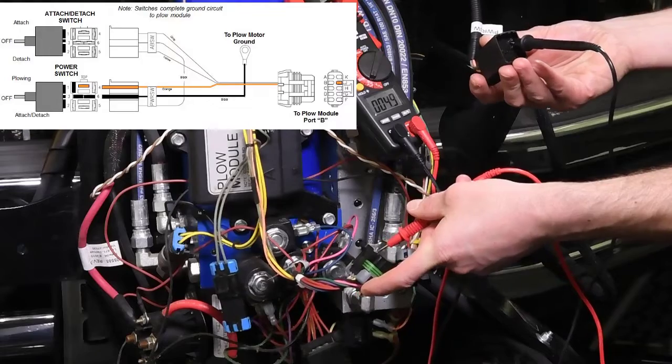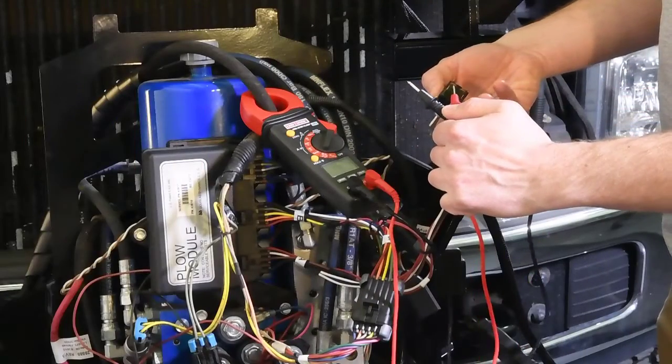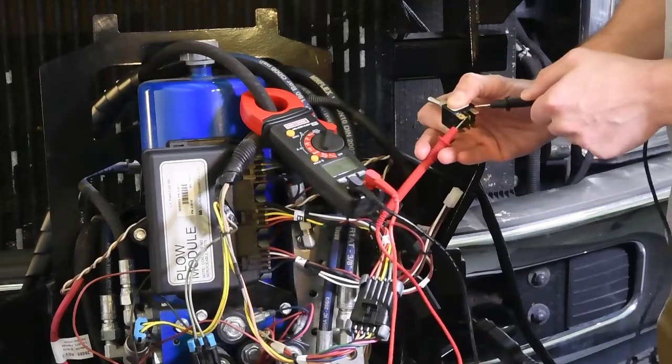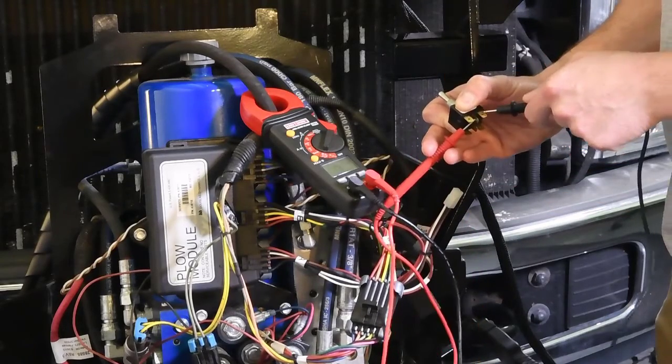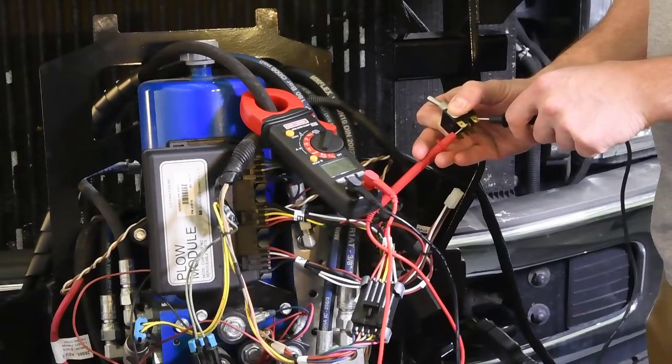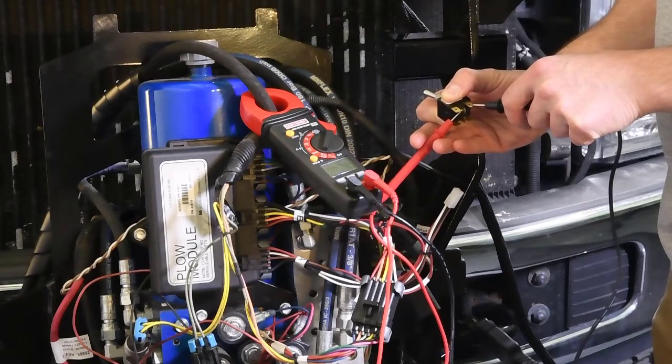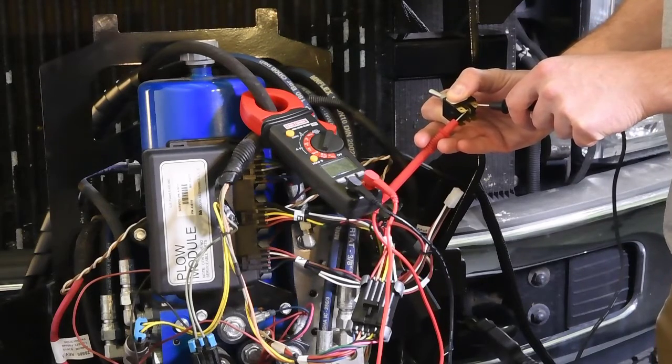This test will determine if the plowing mode switch is operational. With the switch facing away from you and in the detented position, place a multimeter lead in the top middle prong. Then place the other lead in the top lead closest to you. You should have a good ohms check. The rest of the points of contact on the switch will have an open circuit.